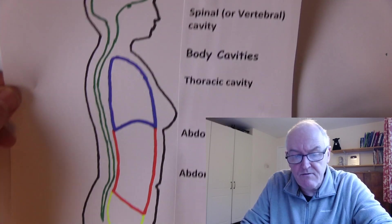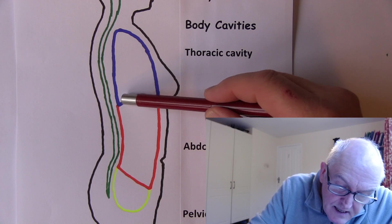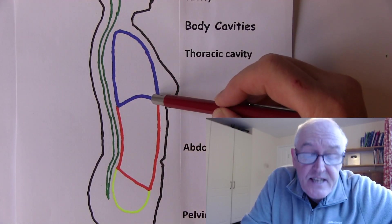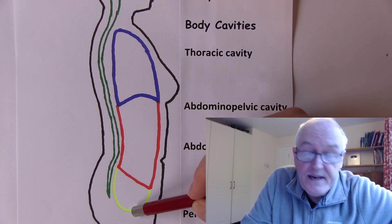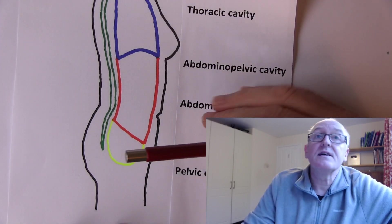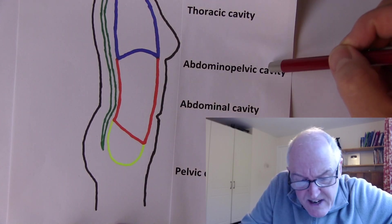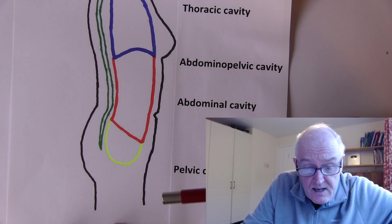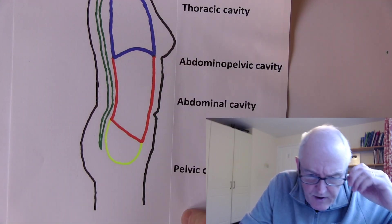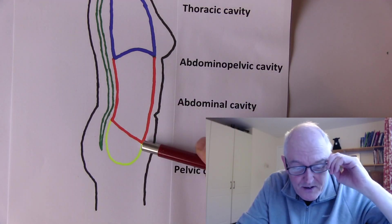Going lower, we have the abdominopelvic cavity. The diaphragm divides the thoracic cavity from the abdominal cavity. The abdominopelvic cavity covers the abdomen and the pelvis. Anatomically it is one cavity — for example, during pregnancy the uterus expands up into the abdominal cavity as the fetus rises.